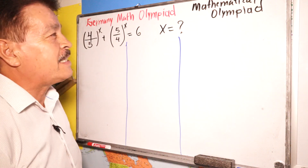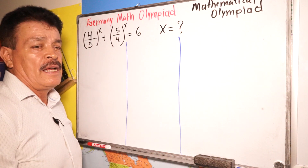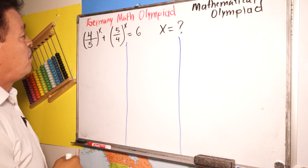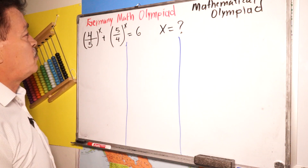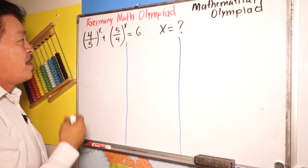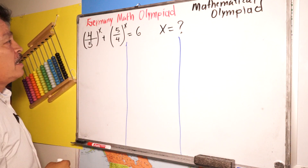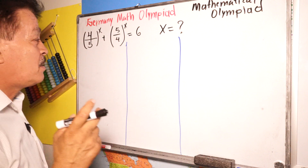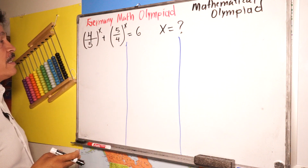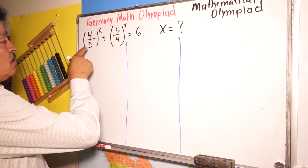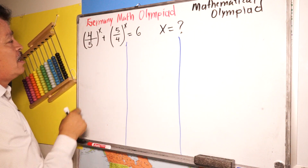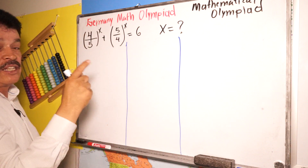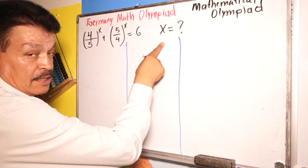Welcome to our class Matemaris Olympiad. Today I will solve this example. This problem belongs to the Germany Math Olympiad. It was a hard problem, so I will try to solve it to find the answer for X. We have four-fifths to the X power plus five-fourths to the X power equals six. How much is X?